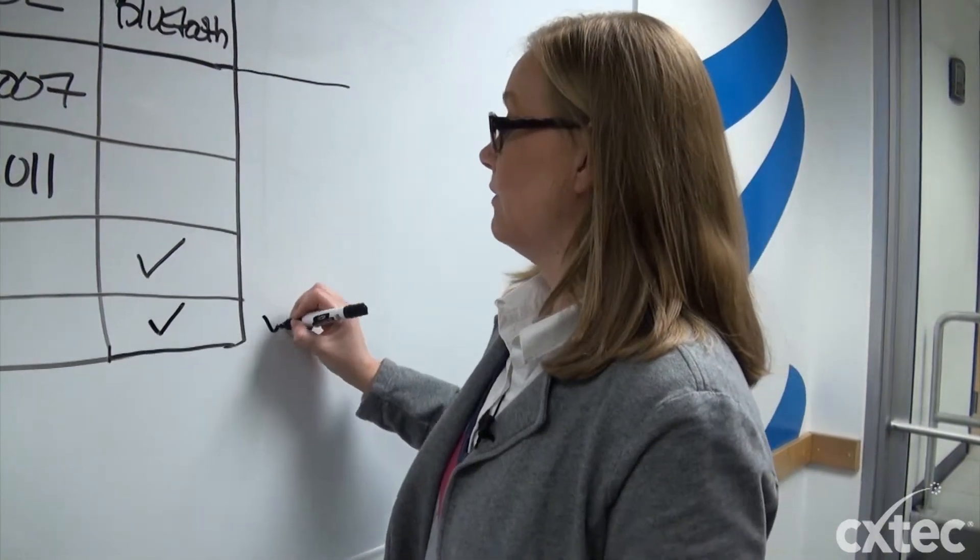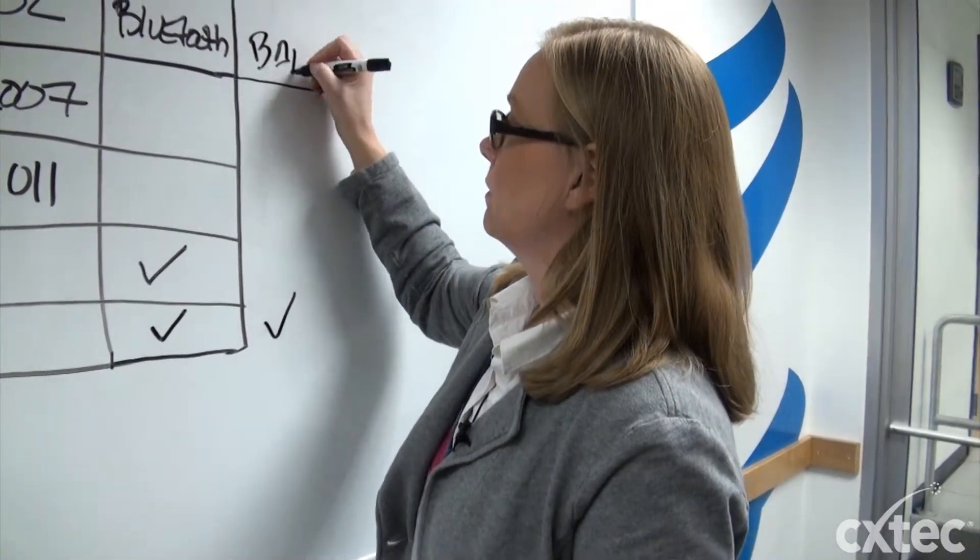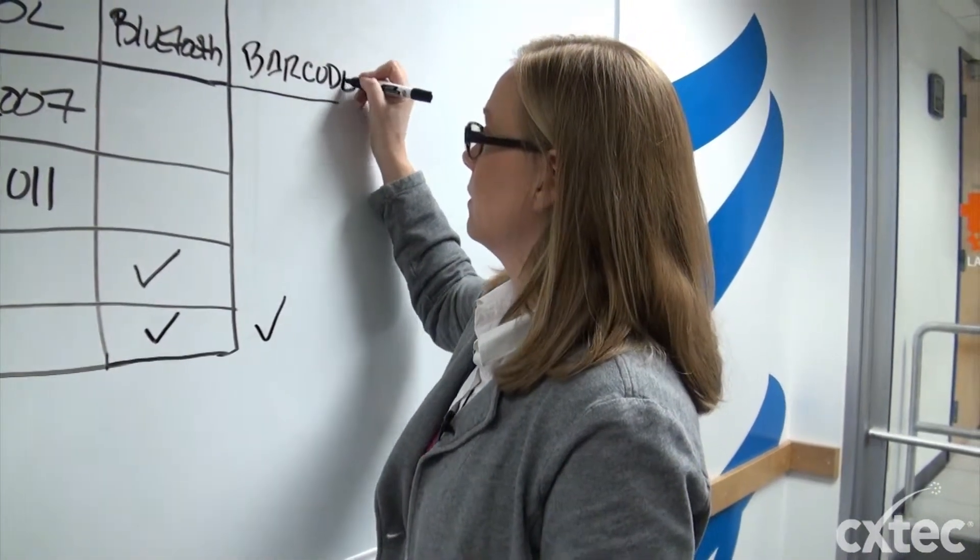In addition to Bluetooth the 7926 includes a barcode scanner. So a 2D barcode scanner is included. One of the really cool features about the 26 and the 25 is all the batteries and all the chargers are actually interchangeable between those models as well.